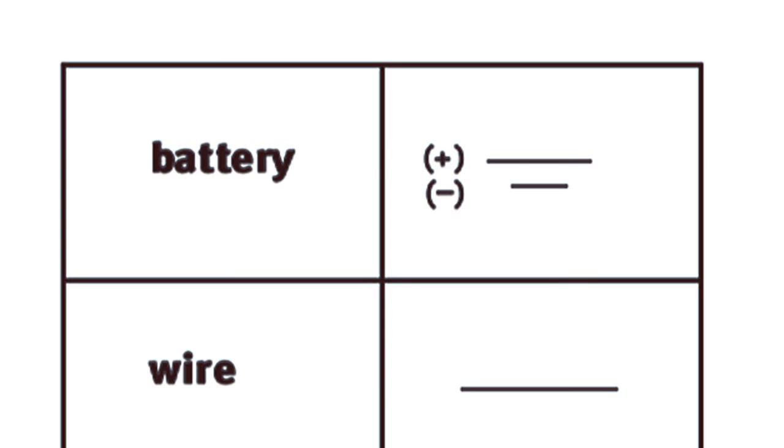Explain that the longer horizontal line in the battery symbol depicts the positive terminal, and the shorter horizontal line depicts the negative terminal.